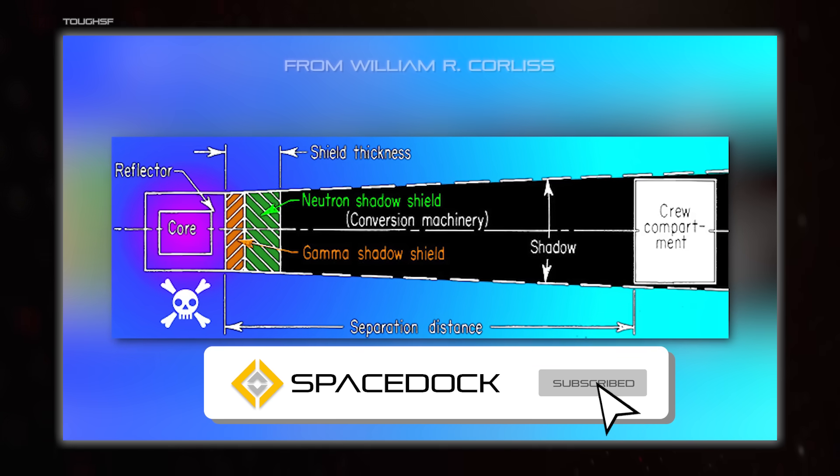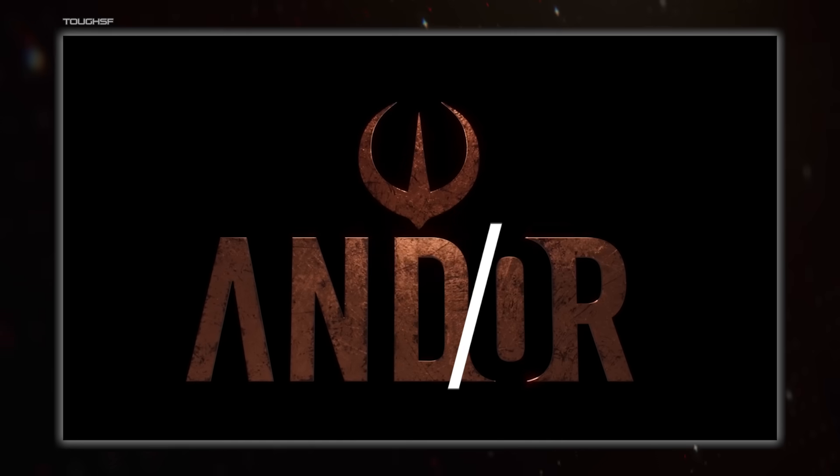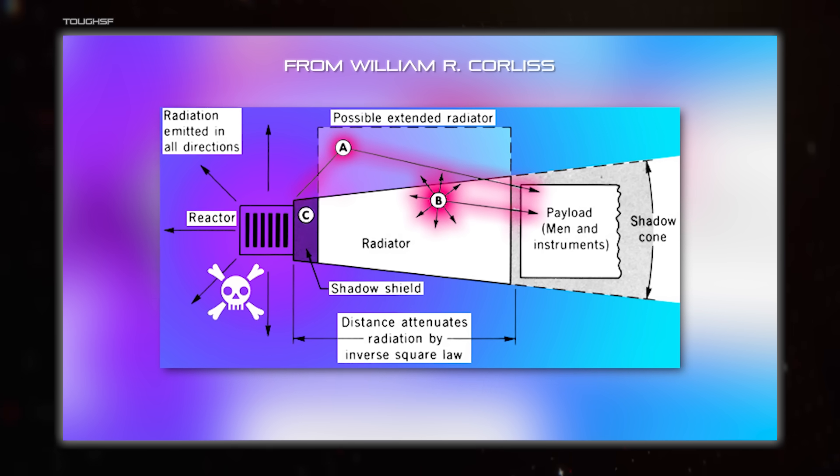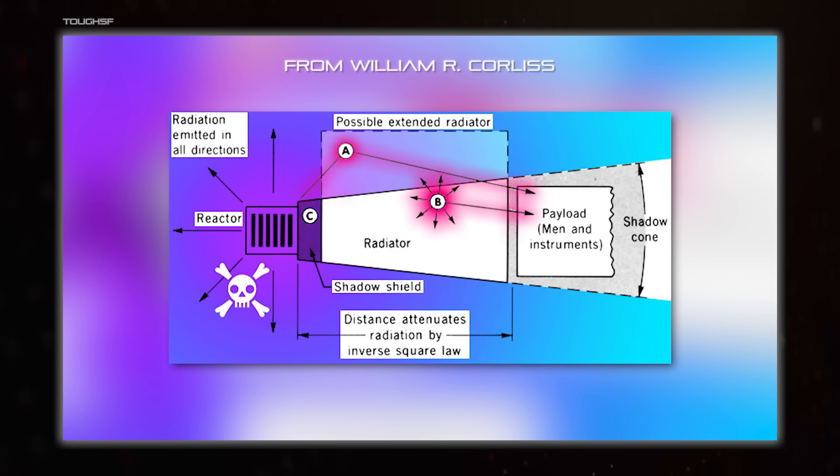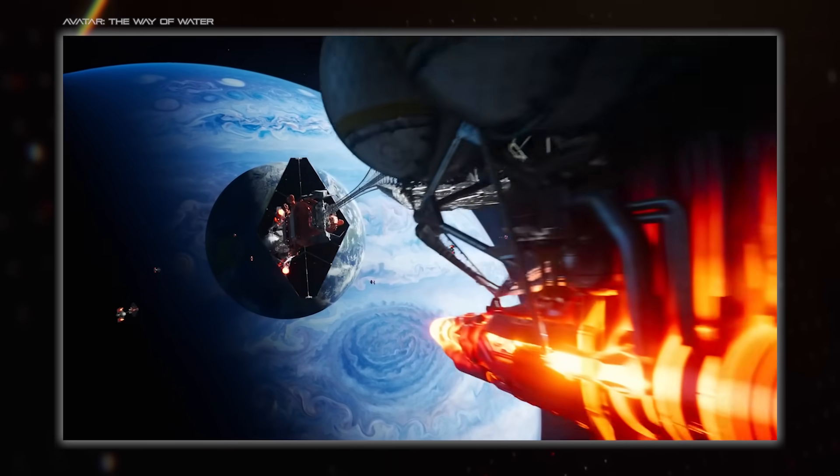The biggest downside is the radioactivity of the reactor when it's active, requiring heavy shielding and or lots of distance from the rest of the ship's components to protect it. They also need radiators even when not active, since the radioactive decay never stops.